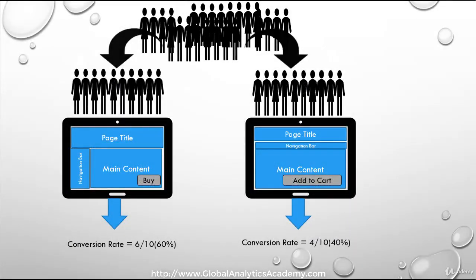Visitors to the page are randomly shown one of the variants. Then, Optimize captures the data for each variant against an objective that you have outlined — for example, reducing bounce rate or increasing conversions — and identifies which one drives the better outcome. You can also use specific audiences for your experiment using the targeting capabilities of Google Optimize.